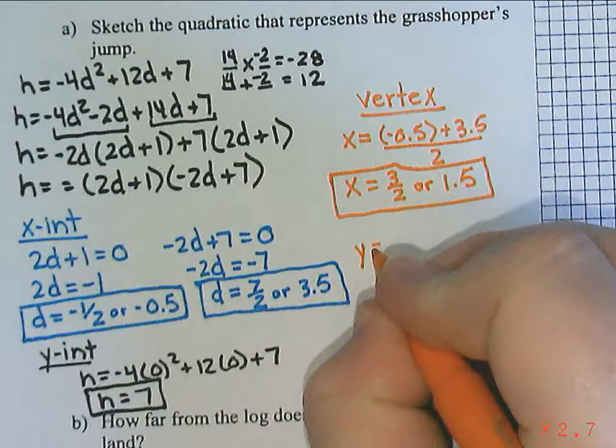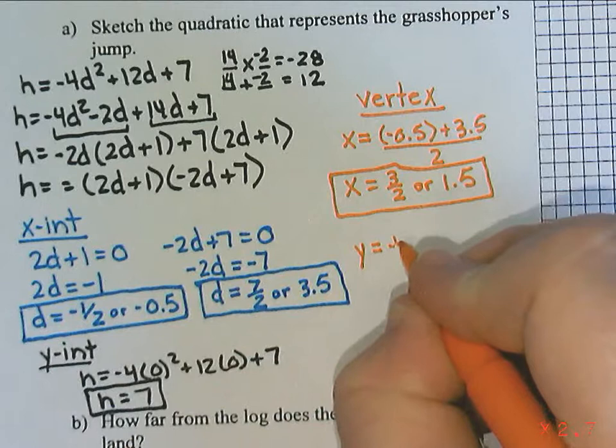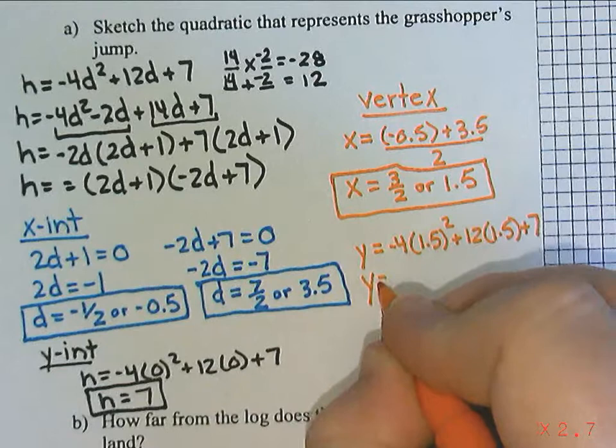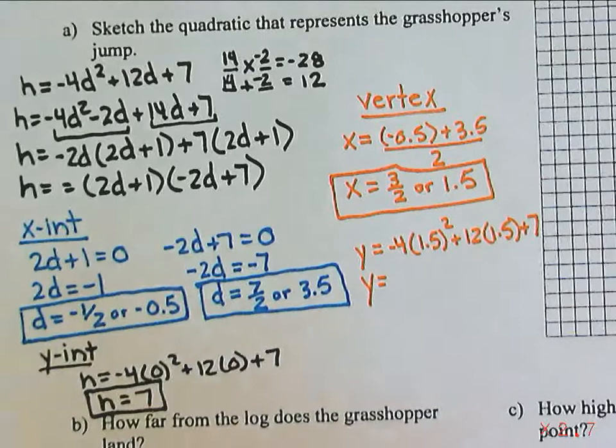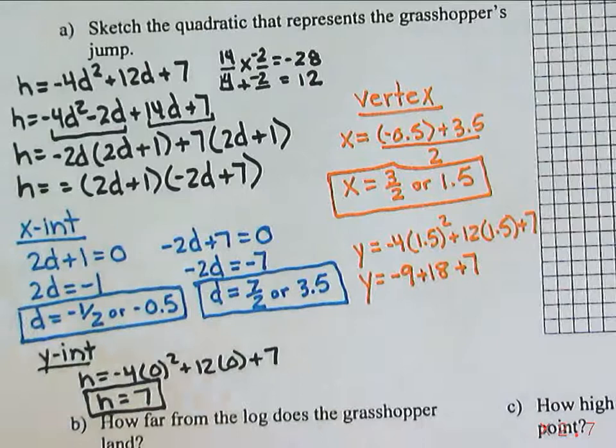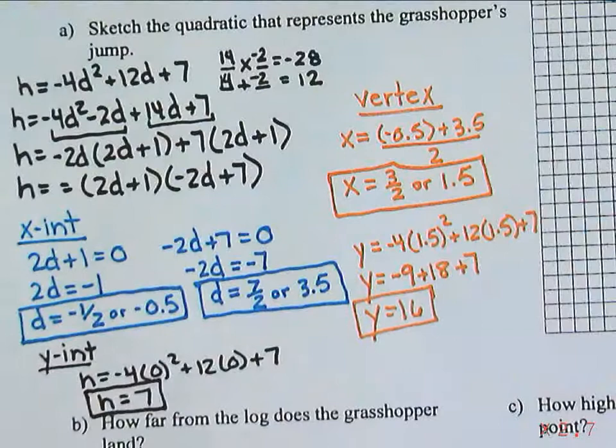Now to find the y part of the vertex, we're going to take either that 3 over 2 or the 1.5 and sub it into the equation. I think it might be a little easier if we do the 1.5. So I'm going to do y equals negative 4 times 1.5 squared plus 12 times 1.5 plus 7. 1.5 squared is 2.25 and 2.25 times negative 4 is negative 9. Now 12 times 1.5 is positive 18 and then plus 7. Negative 9 plus 7 is negative 2, plus 18 would give me 16.